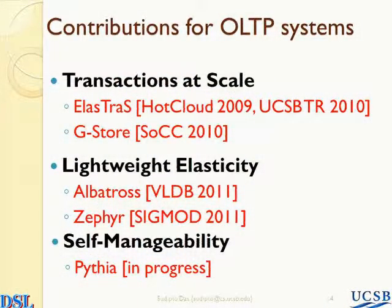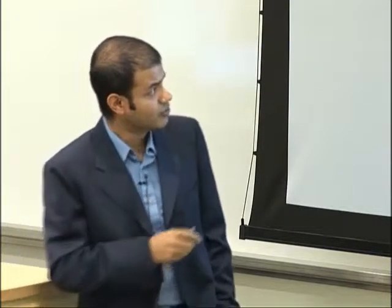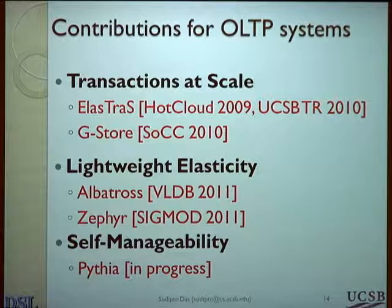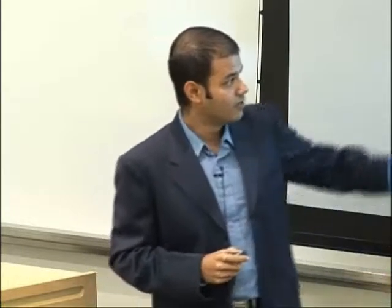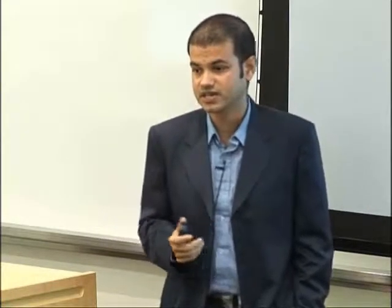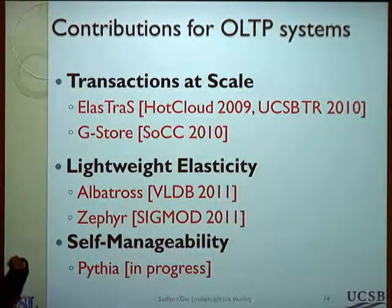To this end, my dissertation makes the following contributions. To provide transactions at scale, I've designed two different systems that allow you to scale out on a cluster of commodity nodes while providing transactional access. One system called Elastras uses a static partitioning technique, while another system called GStore allows you to form the partitions dynamically on demand. To provide lightweight elasticity, I've proposed two different designs. One design called Albatross provides lightweight elasticity in a shared storage or decoupled storage architecture. Zephyr, on the other hand, provides lightweight elasticity in a classical shared-nothing database cluster. And in the self-manageability front, I'm currently working on a design called Pythia that allows you to do workload characterization and tenant placement.